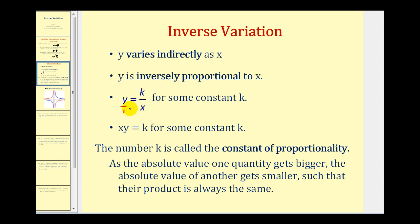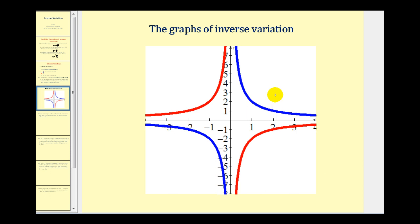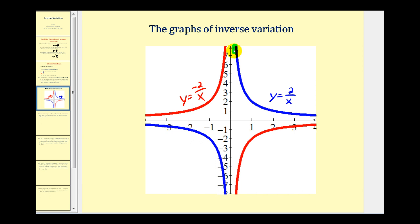Let's take a quick look at the graph of Y equals K over X. The blue graph is Y equals 2 divided by X, and the red graph is Y equals negative 2 divided by X. In many cases we're only concerned about the first quadrant. What you'll notice is that as X increases, Y decreases.